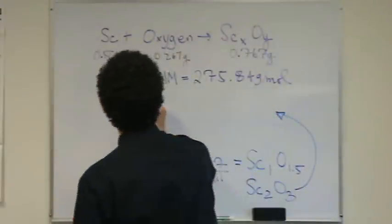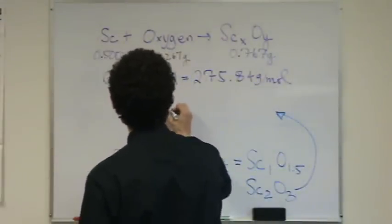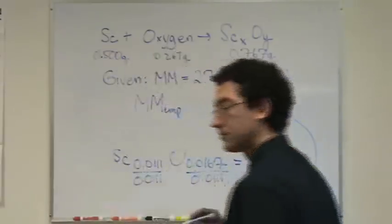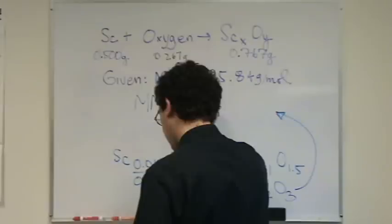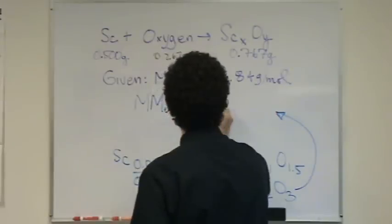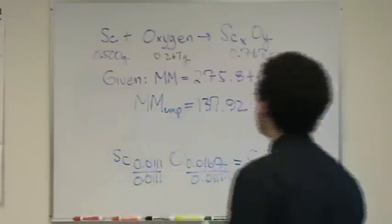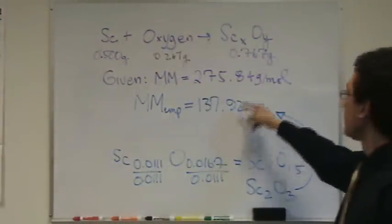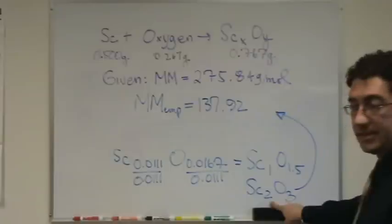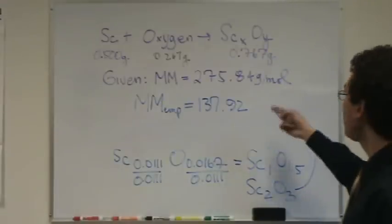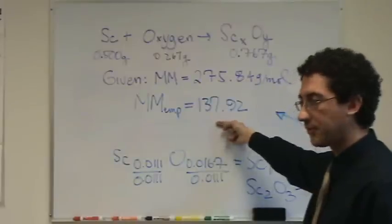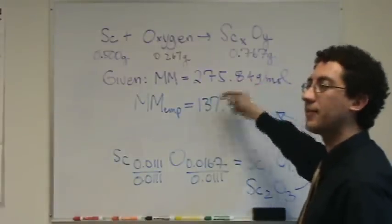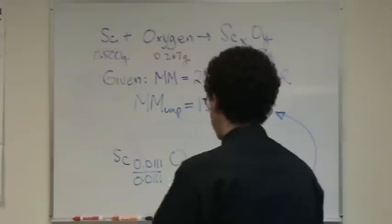What you do is you take this compound down here. And you find its molar mass. So, the molar mass of what I found. Or maybe I should say the molar mass of the empirical. Is going to be, and I found this earlier, it looks like it's 137.92. So, this is found. That's given. It's found from the Sc2O3. What you do is take the molar mass of the given number divided by the empirical number. Or it's the molar mass of the molecular formula divided by that of the empirical. So, I'll do that.